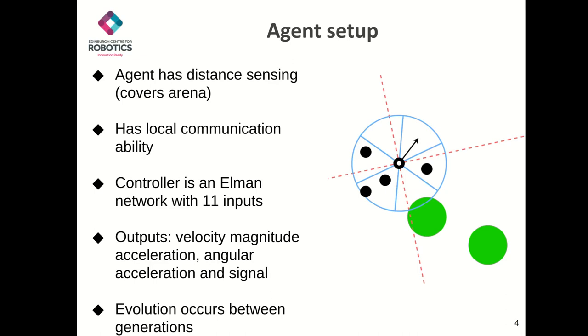Each agent has distance sensing, with the range being large enough to always cover the environment. The agents have 4 distance sensors, one in front, one on the left, one on the right, and one behind. This is displayed as the red dashed lines in the image where the gap between the dashed lines are the distance sensors.